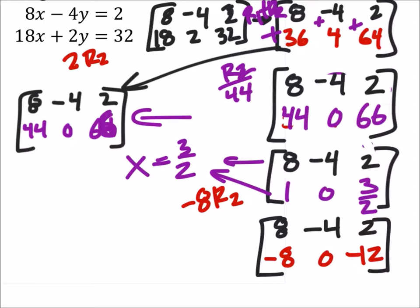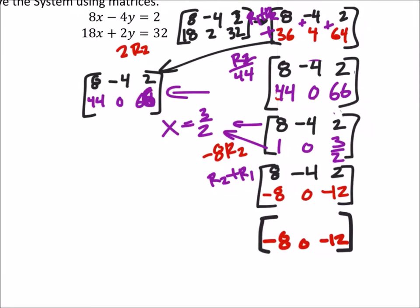Okay. So now when I add, when I take row 2 and add it to row 1, then it's going to eliminate that 8 in the top left there. So I still have that bottom row, but negative 8 plus 8 is 0. 0 plus negative 4 is negative 4. And negative 12 plus 2 is negative 10.